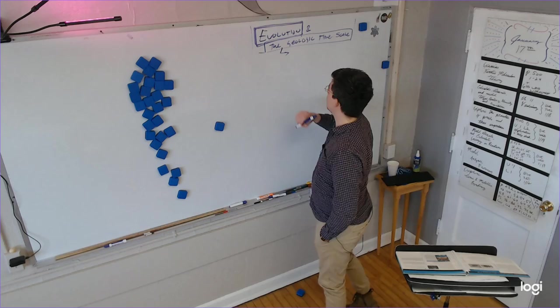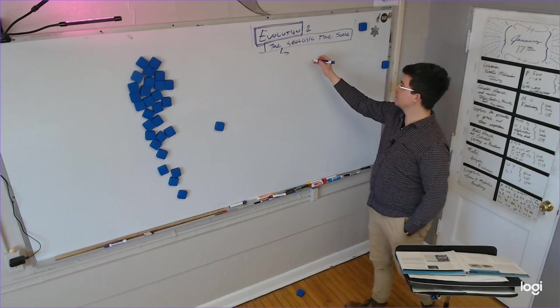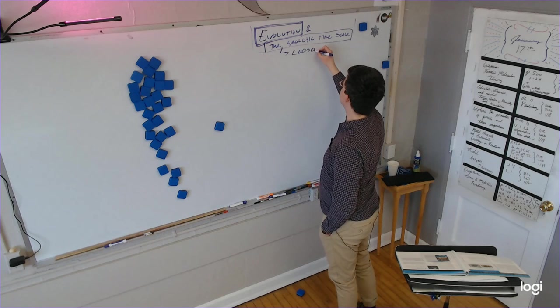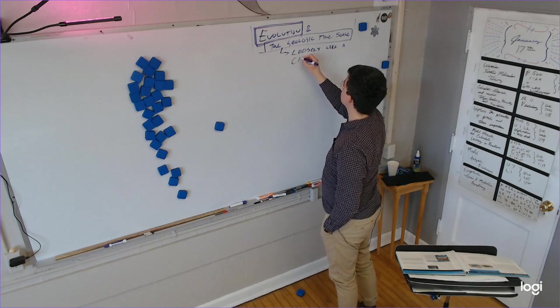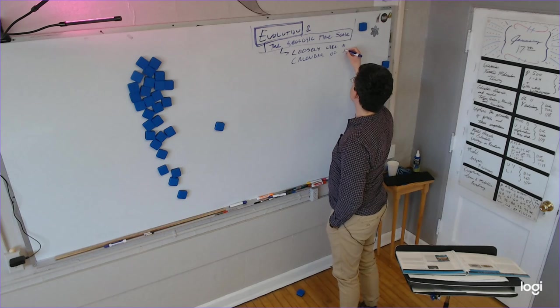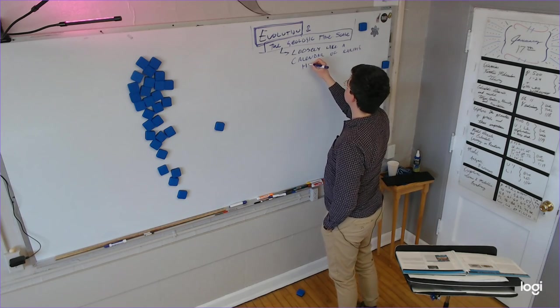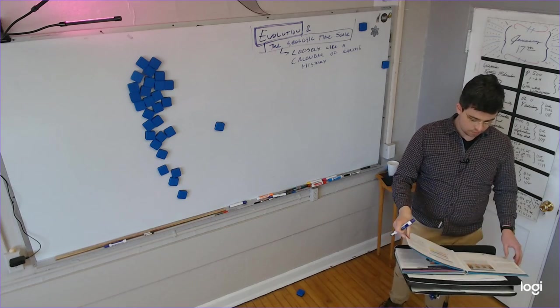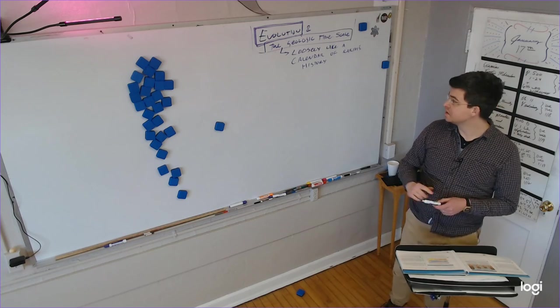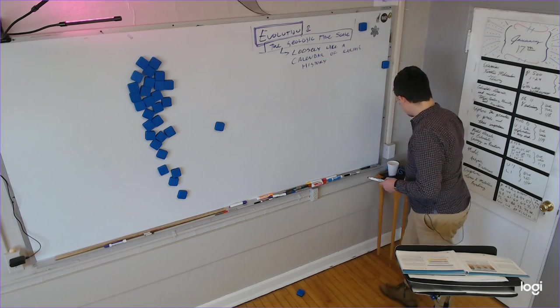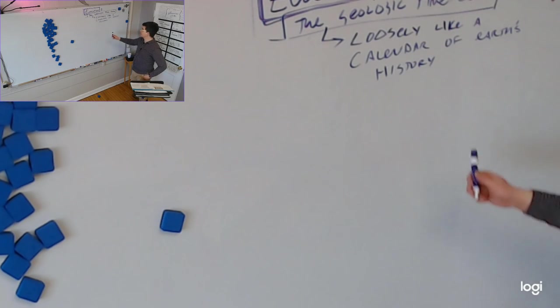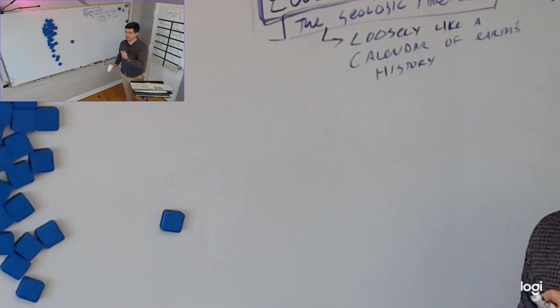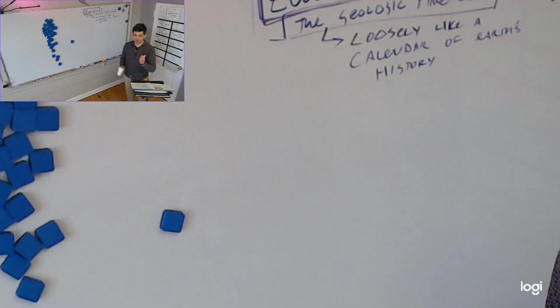But first, the geologic timescale. So we're starting with the geologic timescale. So, the geologic timescale we can kind of think of as loosely, I'm going to put loosely like a calendar of Earth's history. There are some differences between a real calendar that we use on a daily basis and the geologic timescale. What would probably be the most obvious difference between a real calendar and the geologic timescale? Hunter? It doesn't have months and days. Yeah, and I wouldn't say that's the main difference, but you're right. It doesn't have months and days.